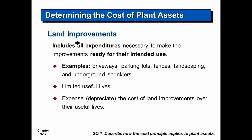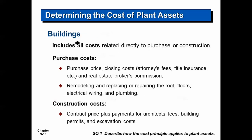If I improve that land — driveways, fences, underground sprinklers — those are costs of land improvements and are depreciated over their useful life as a separate asset. For buildings, the true cost includes the purchase price plus attorney fees, broker commissions, and any costs to remodel or repair the building. Those are not expenses in the year they're done — they are part of the cost of the building.